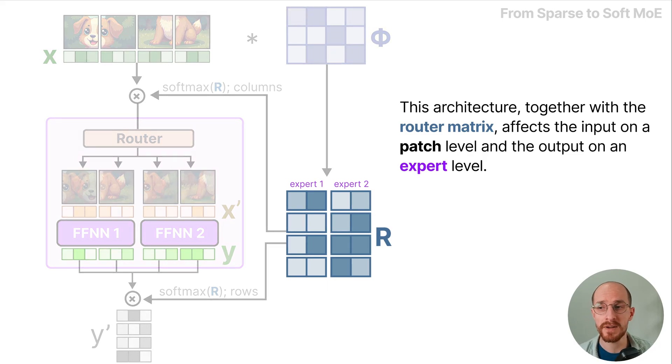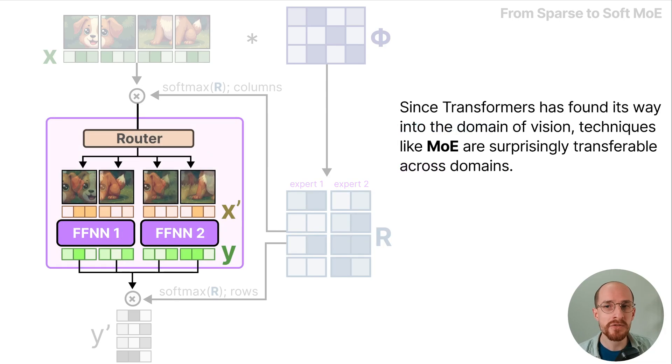This architecture together with the router matrix affects the input on a patch level and the output on an expert level. Since transformers made its way into the domain of vision, techniques like MoE are surprisingly transferable across domains.